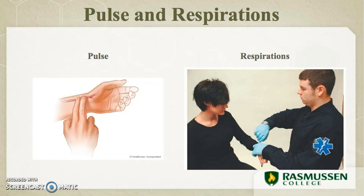We also have respirations, which we typically measure together with pulse, because the patient should not know you are counting their breaths — if they do, they tend to alter their breathing. Respirations are the act of breathing: one inhalation and one exhalation equals one cycle. The respiration rate indicates how well oxygen is being delivered to the body's tissues. The average adult respiration rate is 12 to 20 breaths per minute, which increases for children and infants.